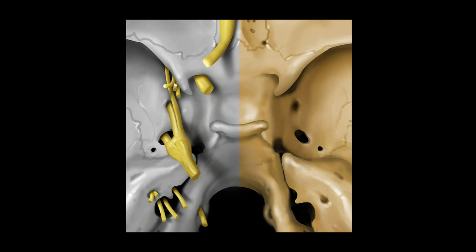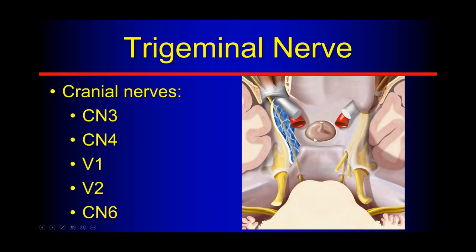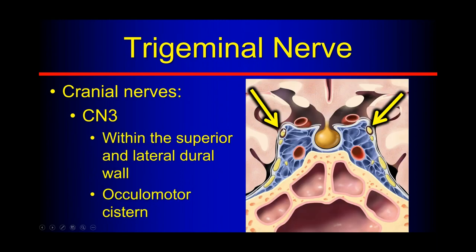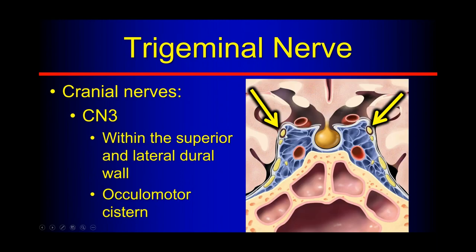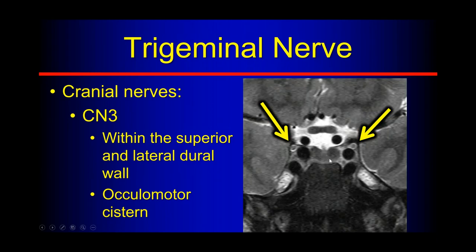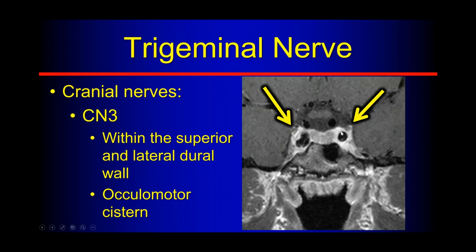On a coronal T2 thin section at the level of the pituitary gland, we see the cavernous carotid immediately lateral. Cranial nerve 3 is nicely visible in its oculomotor cistern with a little CSF around it, superiorly and laterally in the cavernous sinus. When we give contrast, we should see that nerve as non-enhancing. We get a lot of enhancement of the cavernous sinuses around the carotid, but we see those nerves laterally within the wall.